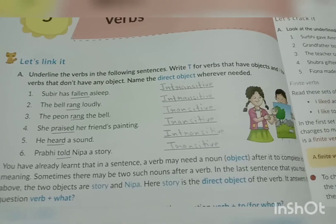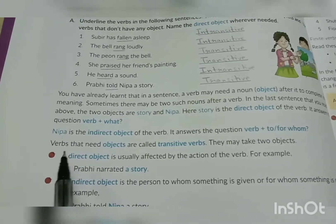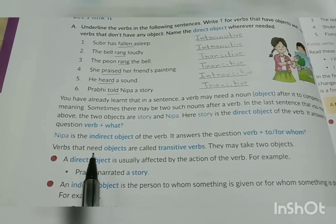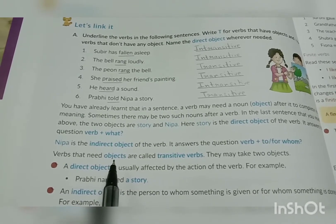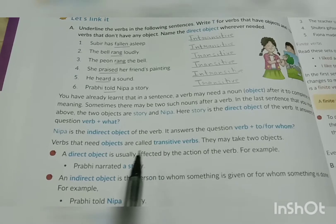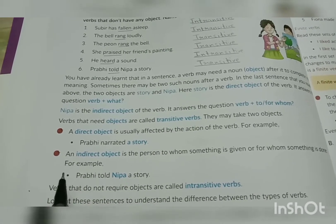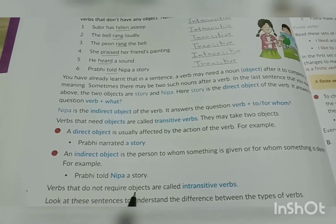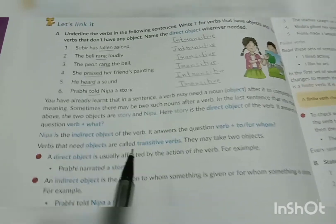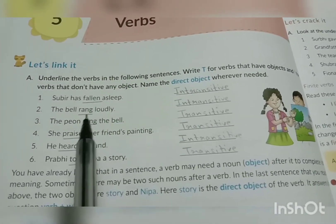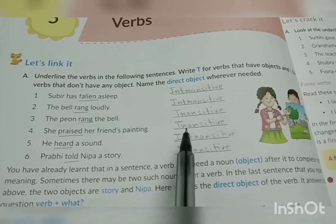As a revision from previous classes, we must understand that verbs that need objects are called transitive verbs. Verbs that do not need any object are called intransitive verbs — यानि जिन verbs को किसी object की requirement नहीं होती है वो होते हैं intransitive verbs. हमने जो underline किये हैं ये verbs हैं और ये बताया है कि कौन से transitive हैं और intransitive।